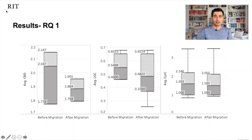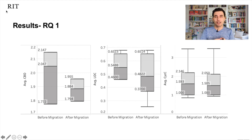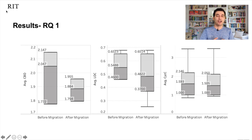Here are the results. We can see that coupling went down, and lack of cohesion — which is the opposite of cohesion — also went down, meaning cohesion went up. Good software quality requires low coupling and high cohesion. We see low coupling and low lack-of-cohesion here. Complexity also went down. For coupling, the average went from 2.0 to 1.8. For lack of cohesion, from 5.4 to 4.8. For complexity, from 1.9 to 1.5.